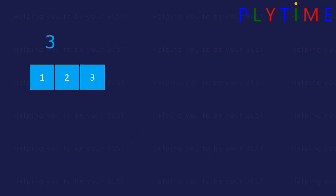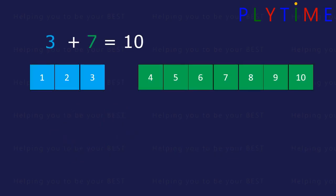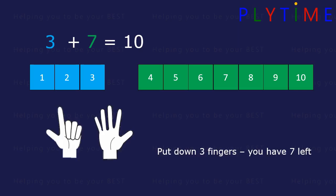3 add 7 is 10. Put down 3 of your fingers. You still have 7 left up. 3 and 7 is 10.